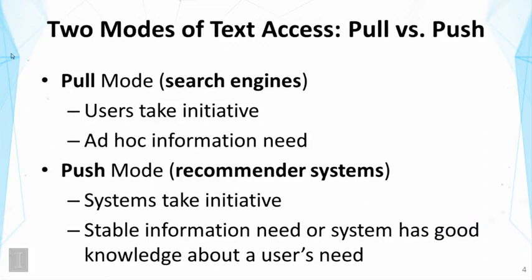Push and pull are two different ways to connect the users with the right information at the right time. The difference is which party takes the initiative. In the pull mode, the users will take the initiative to start the information access process. In this case, a user typically would use a search engine to fulfill the goal. For example, the user may type in a query and then browse the results to find the relevant information. This is usually appropriate for satisfying a user's ad hoc information need.